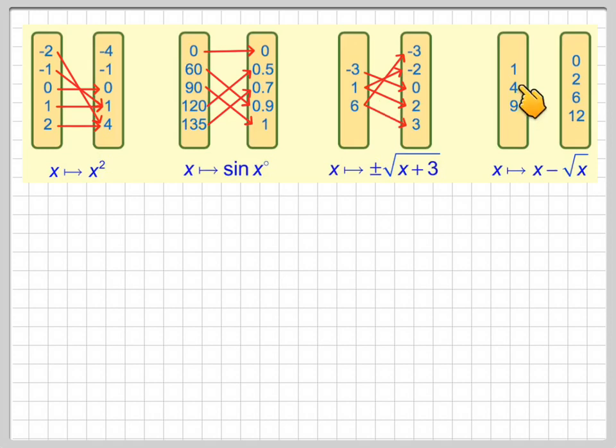The final one. 1 minus the square root of 1, so it's 1 minus 1 gives me 0. So 1 will map onto 0. 4 minus the square root of 4, so it's 4 minus 2, which will go onto 2.